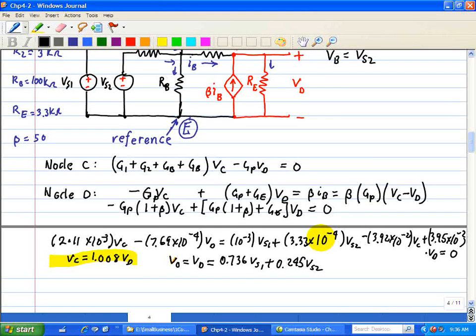Again, when we did this example, when we put this dependent source on the other side of the equations, it destroyed the symmetry that's usually associated when we do node voltage analysis. So when we have dependent sources, it destroys the symmetry of the equations.